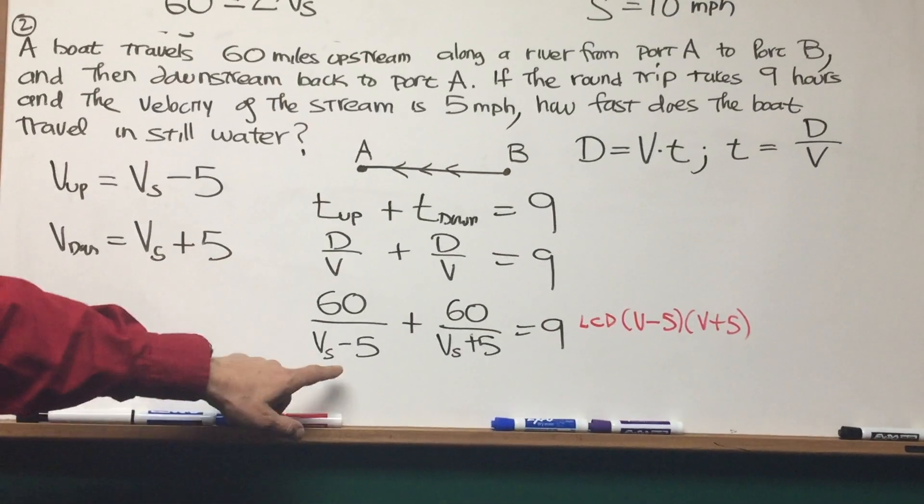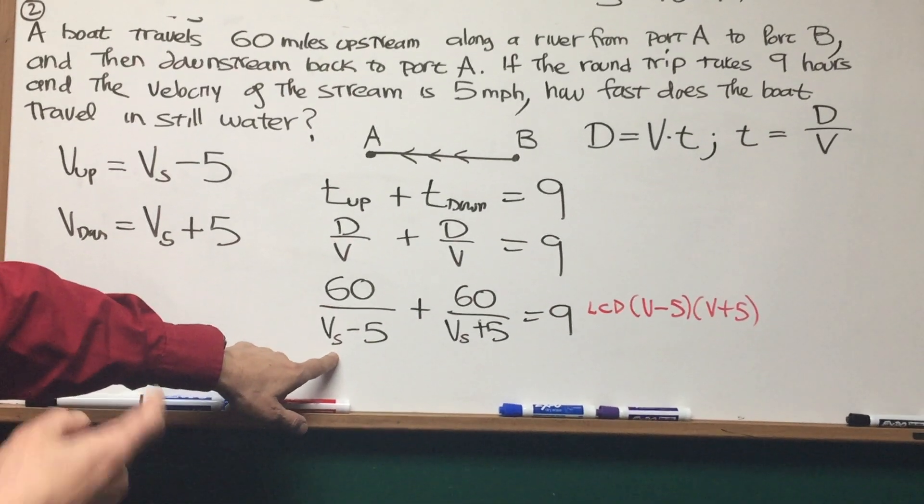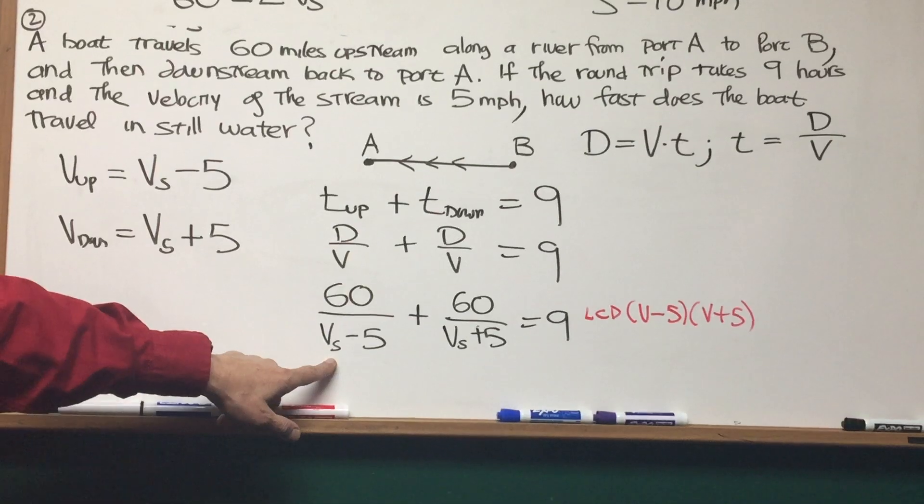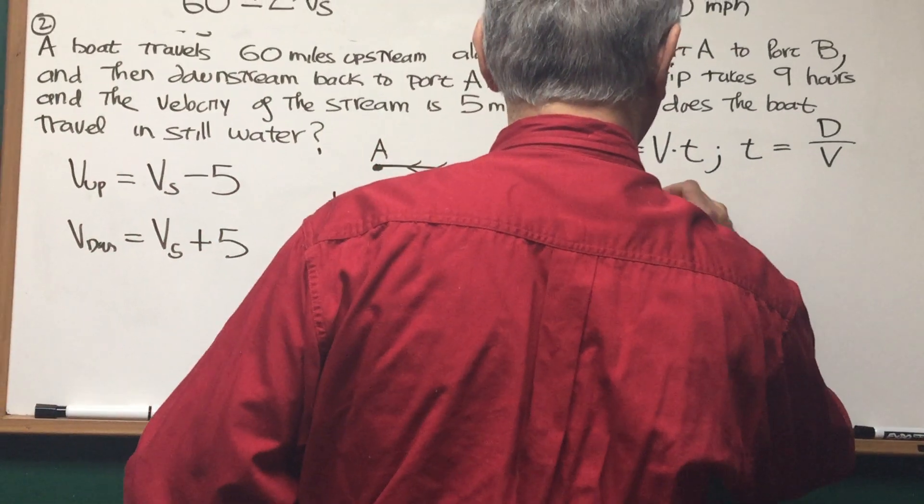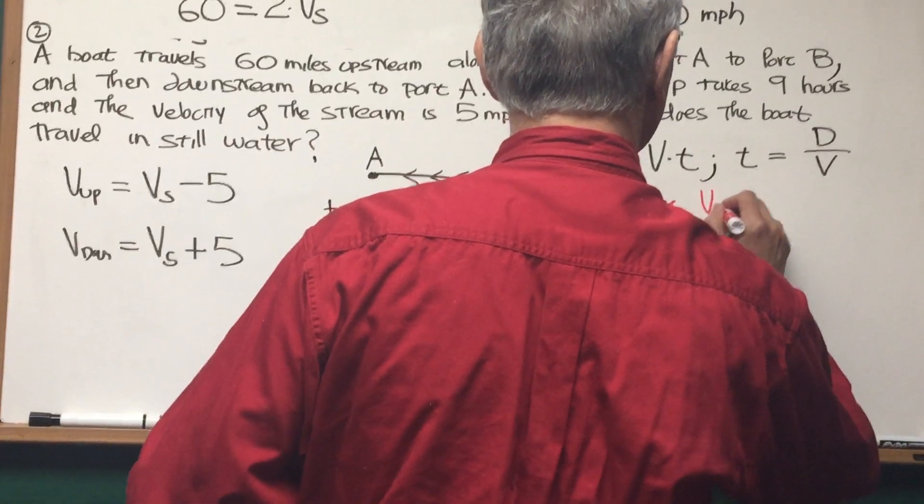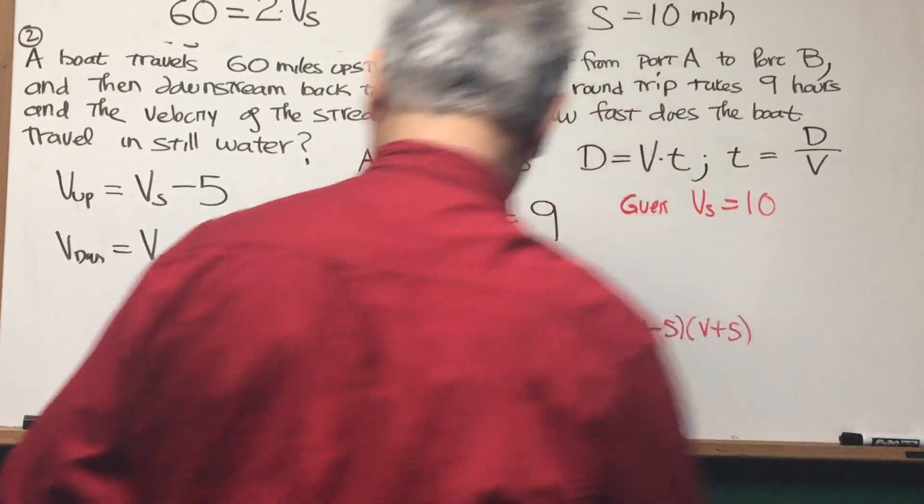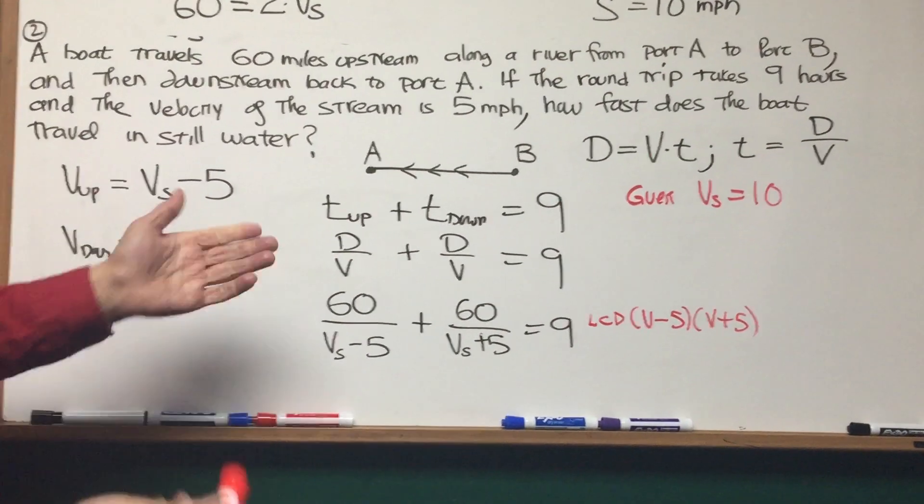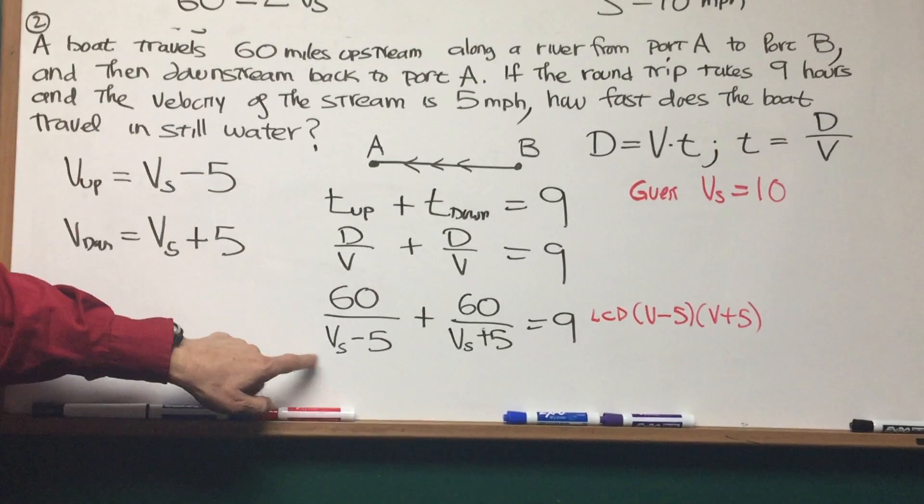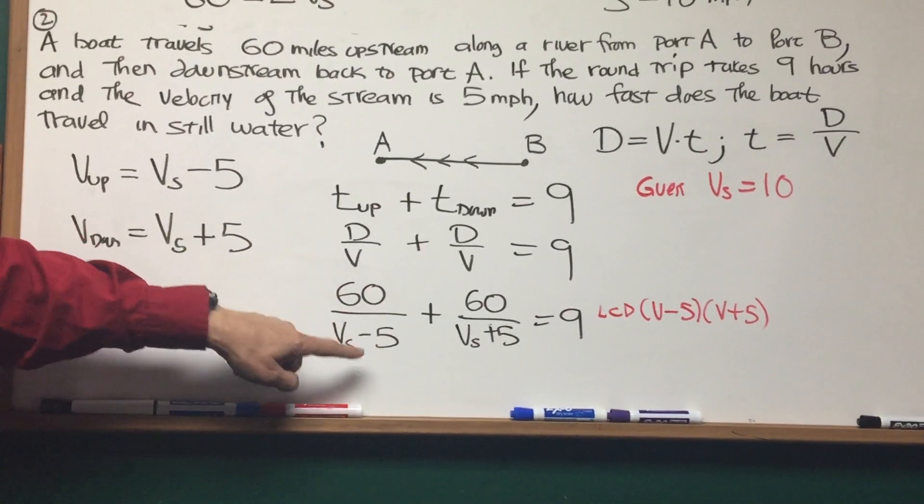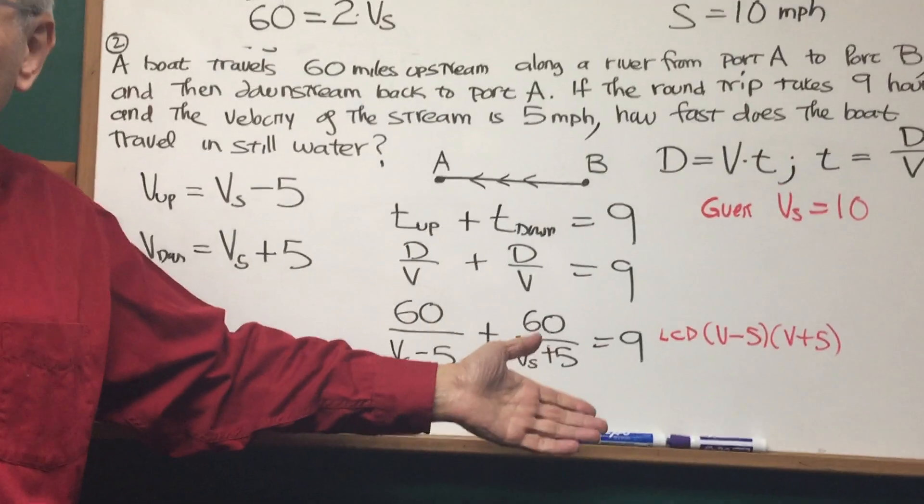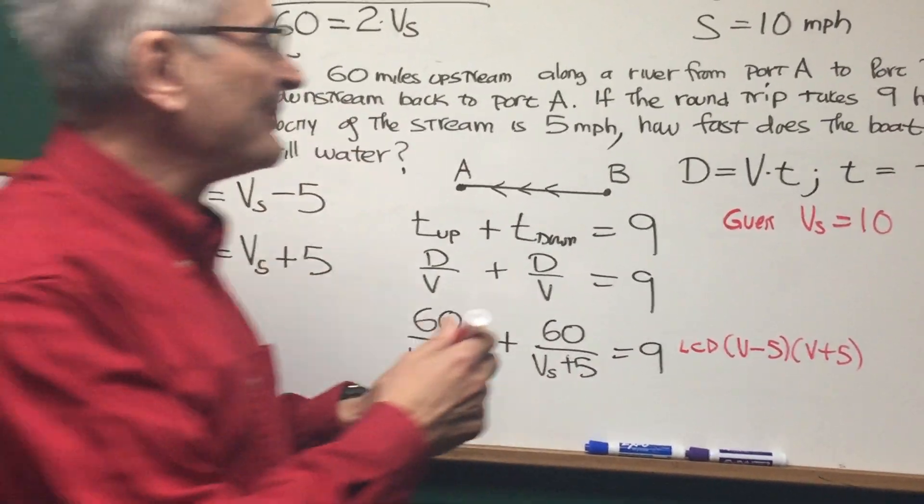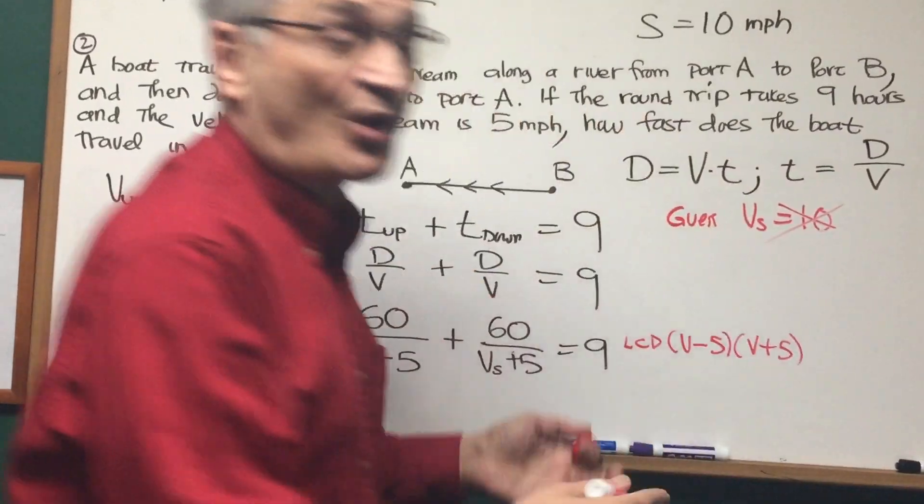Let's guess at what the value of the velocity might be in still water, v sub s. Let's make a guess, we're going to guess v sub s is equal to 10. So let's fit it into the formula and see what we get. 10 minus 5 is 5, 60 divided by 5, that would be 12 hours. Well, that already exceeds 9 hours, so it can't be, the velocity in still water can't be 10.